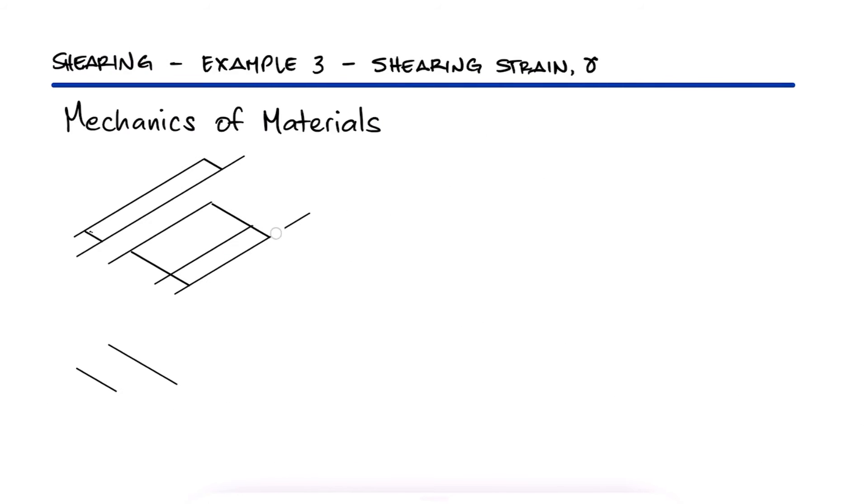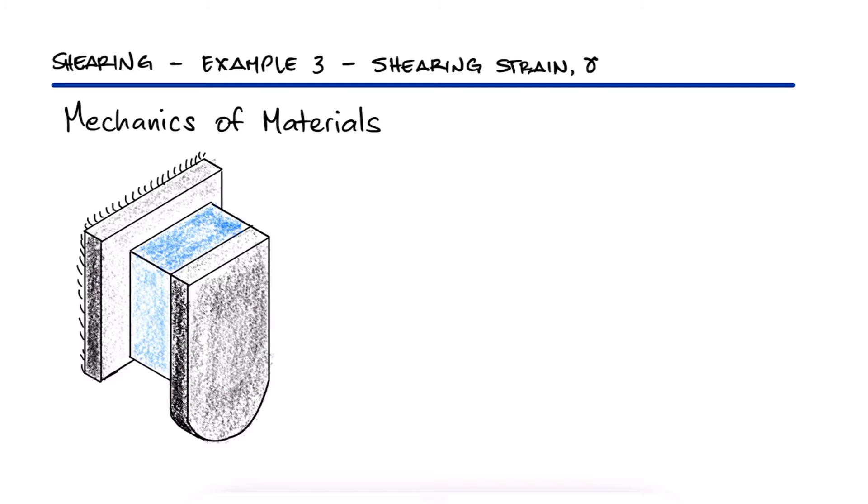A rubber block is bonded to a rigid support into a vertical plate that is subjected to a 60 kip vertical load P. If the modulus of rigidity, or shear modulus, is 120 ksi, what is the vertical displacement of the plate?